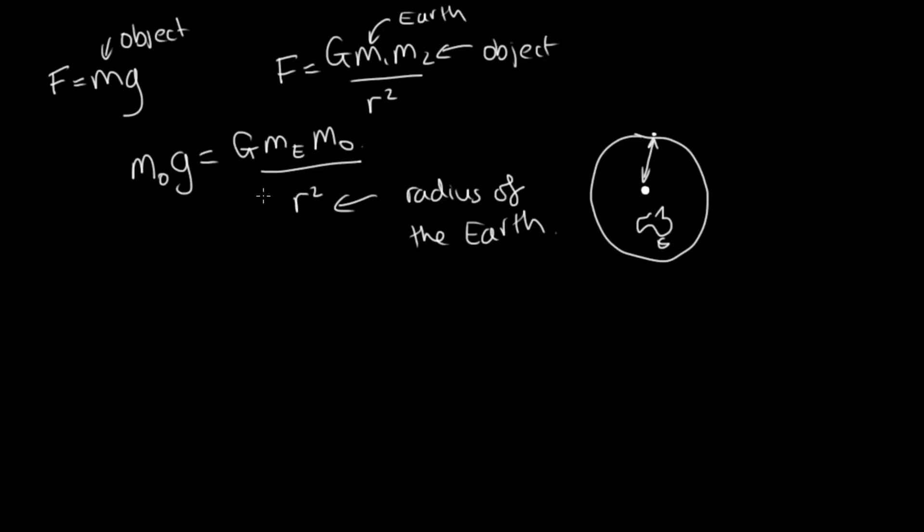You can see with these two equations, the mass of the object appears on both sides. So we can actually cancel that one out. And so now we've got an expression for little g, the acceleration due to gravity on the surface of the Earth. G is equal to capital G times the mass of the Earth over the radius of the Earth squared.